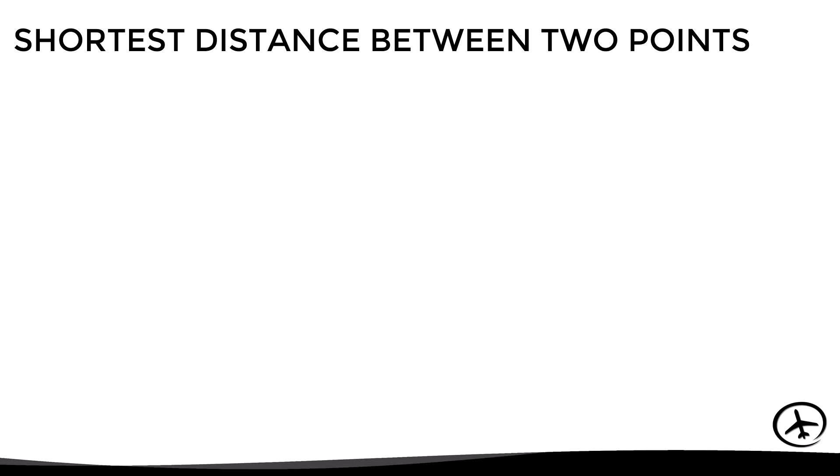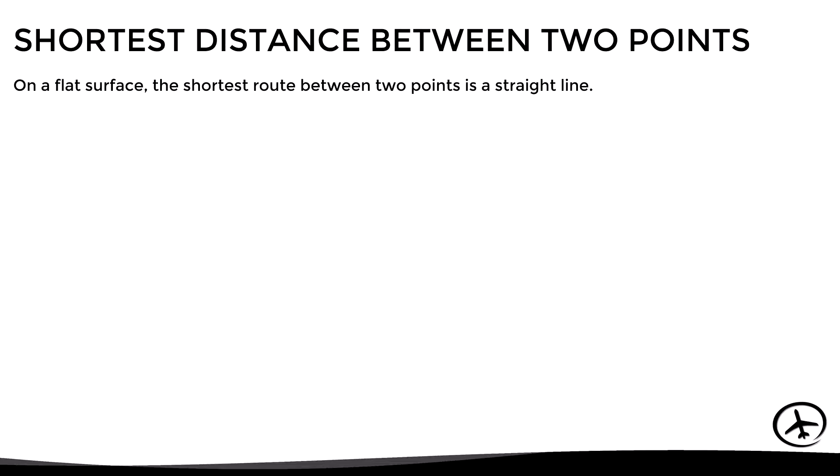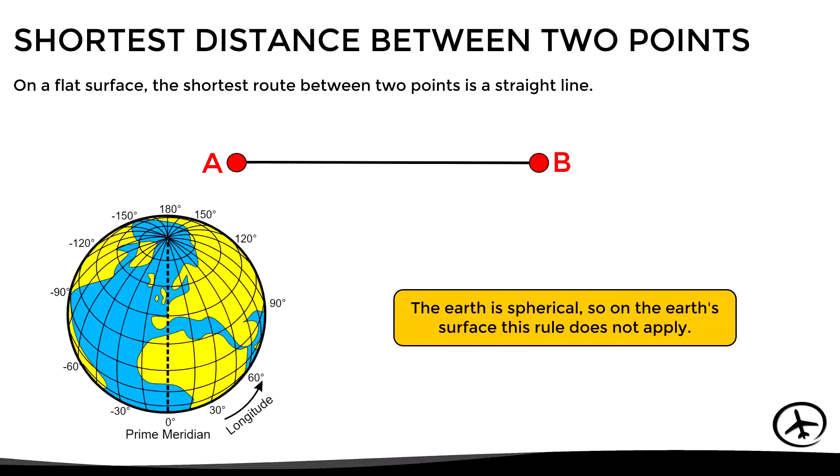So what is the shortest distance between two points on the Earth's surface? On a flat surface, the shortest route between two points is a straight line. However, since the Earth is spherical, this rule does not apply in this case.